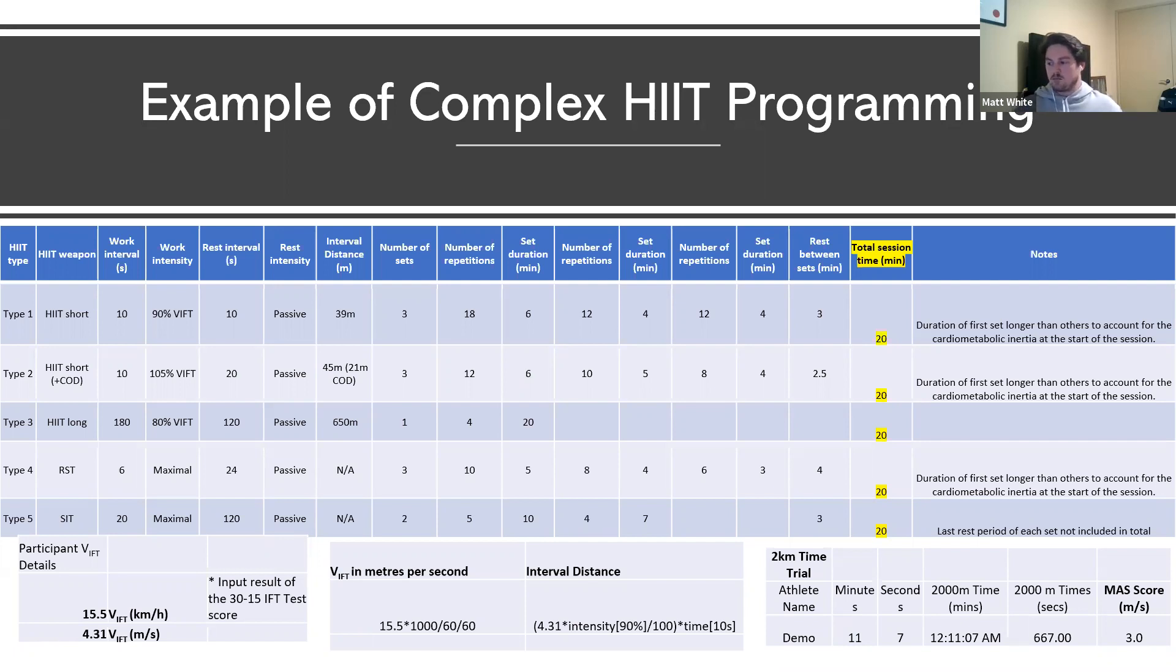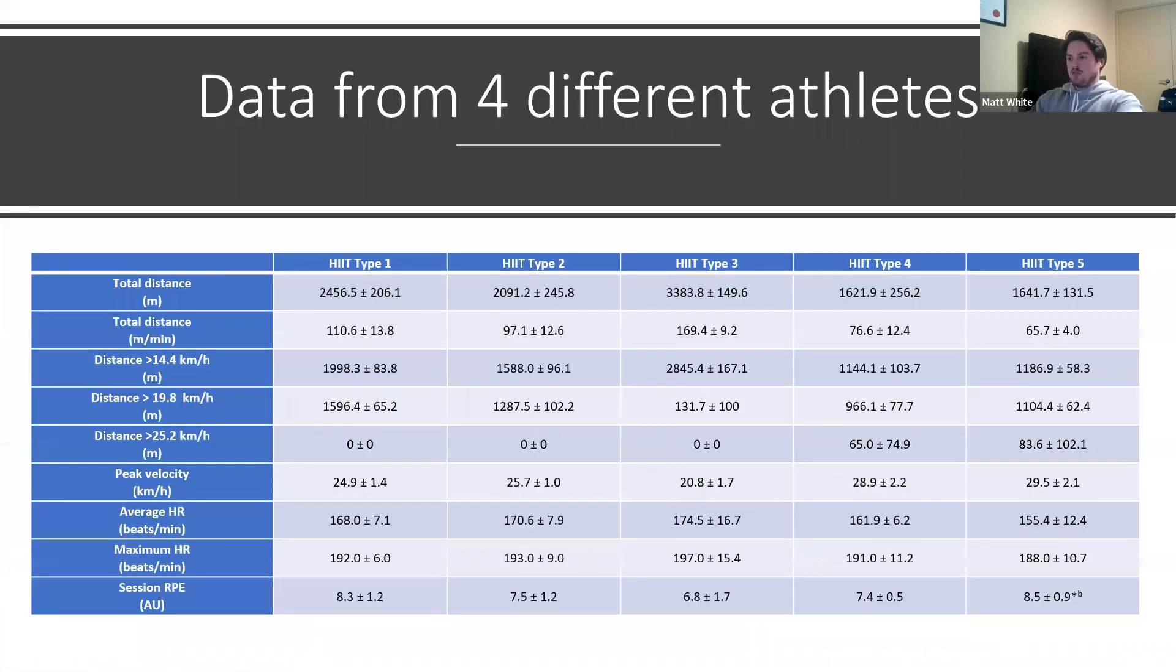Just on the bottom right for clarification, you can also use a 2K time trial to get a meters per second score as well, which then you can use to create an interval distance. That's just another calculation which I can explain if anybody wants that. But you can use other methods to get meters per second rather than just one.